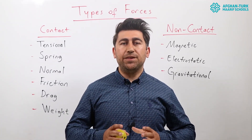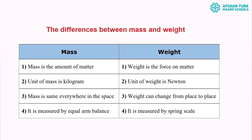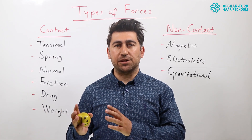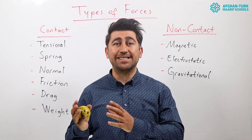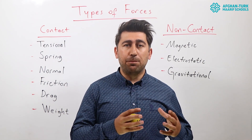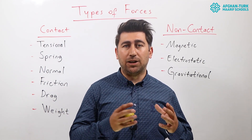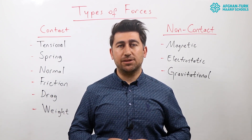Before continuing with non-contact forces, let me explain the differences between mass and weight. Mass is the amount of matter; weight is the force on matter. The unit of mass is kilogram, and the unit of weight is Newton. Mass is the same everywhere in the universe, but weight can change from place to place. For example, a person's weight will change on different planets since it depends on the planet's gravitational force. We can measure mass with an equal arm balance and weight with a spring scale.